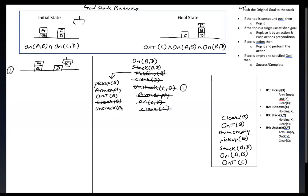In the unstack, we have to unstack A comma B. The preconditions for unstack are: arm should be empty, A should be on top of B, and A should be clear. That is the precondition.